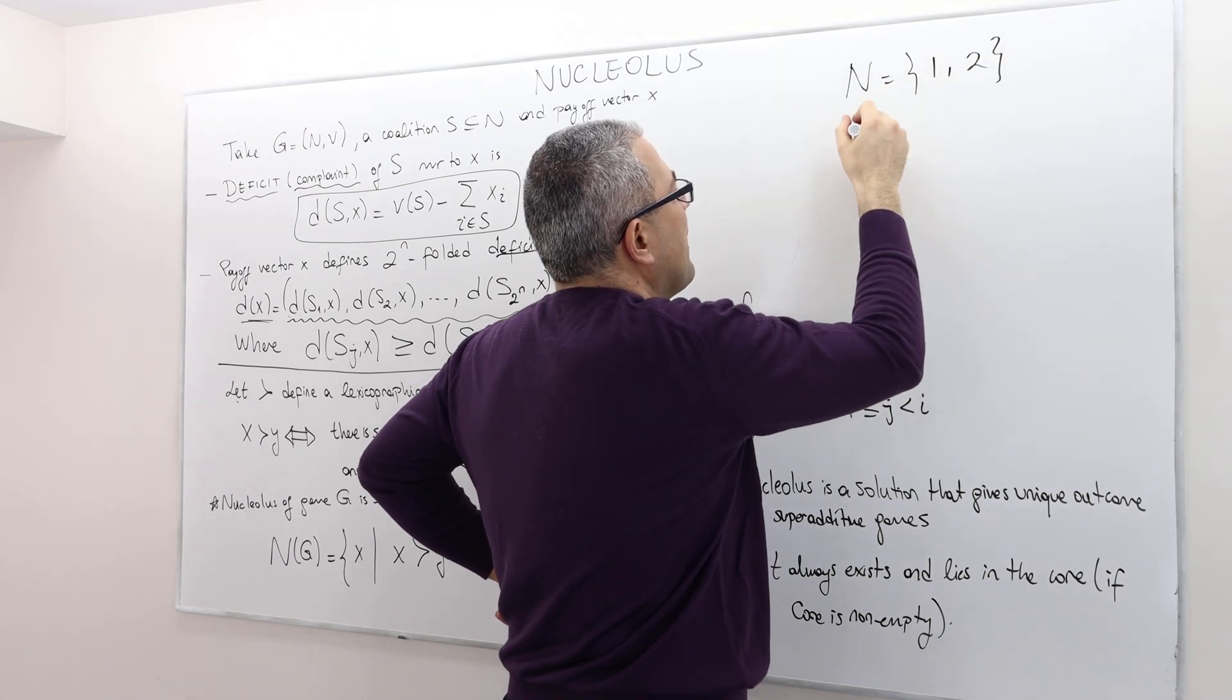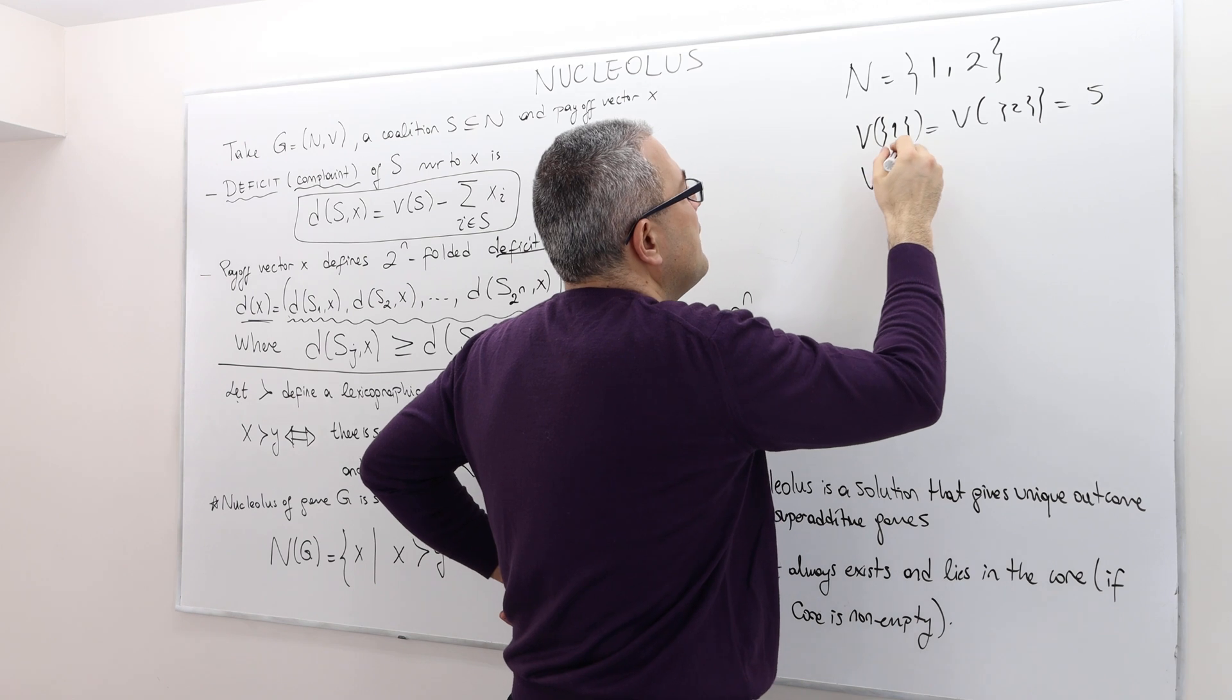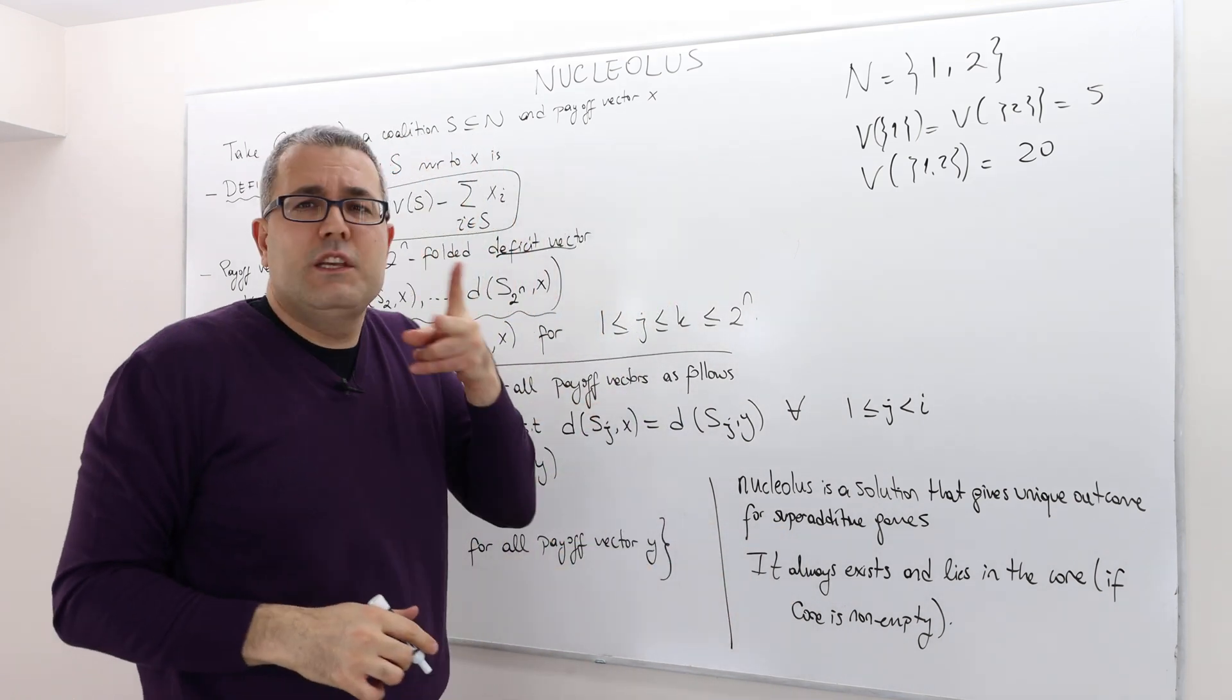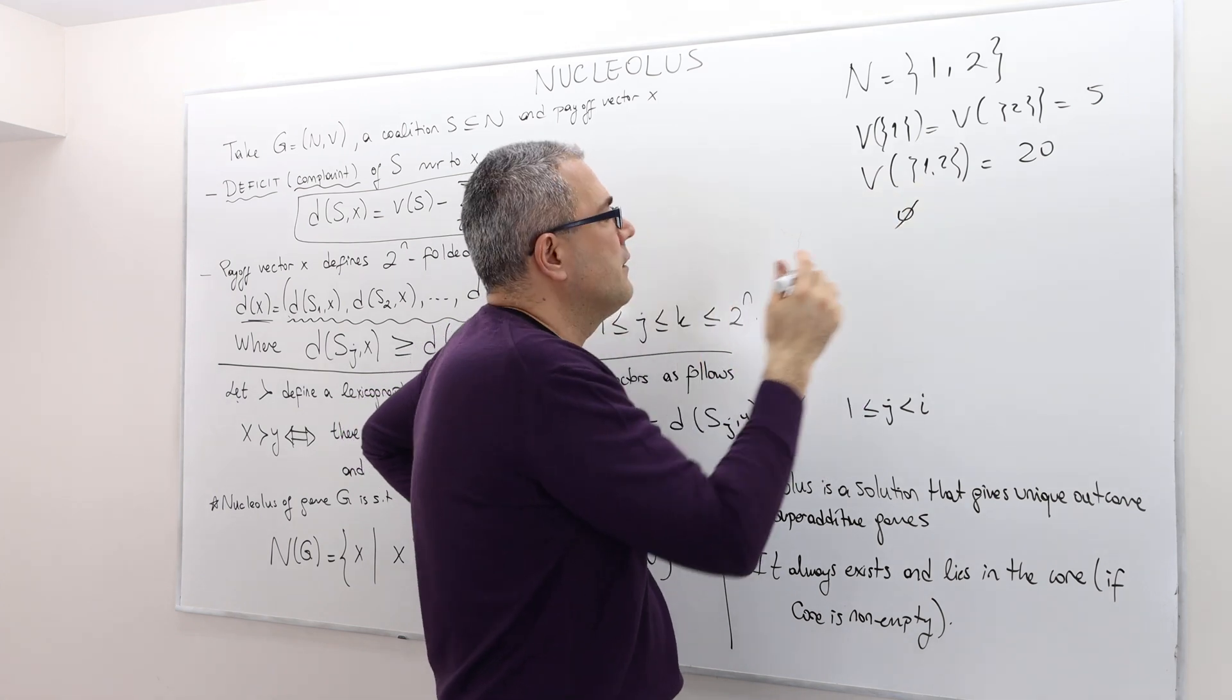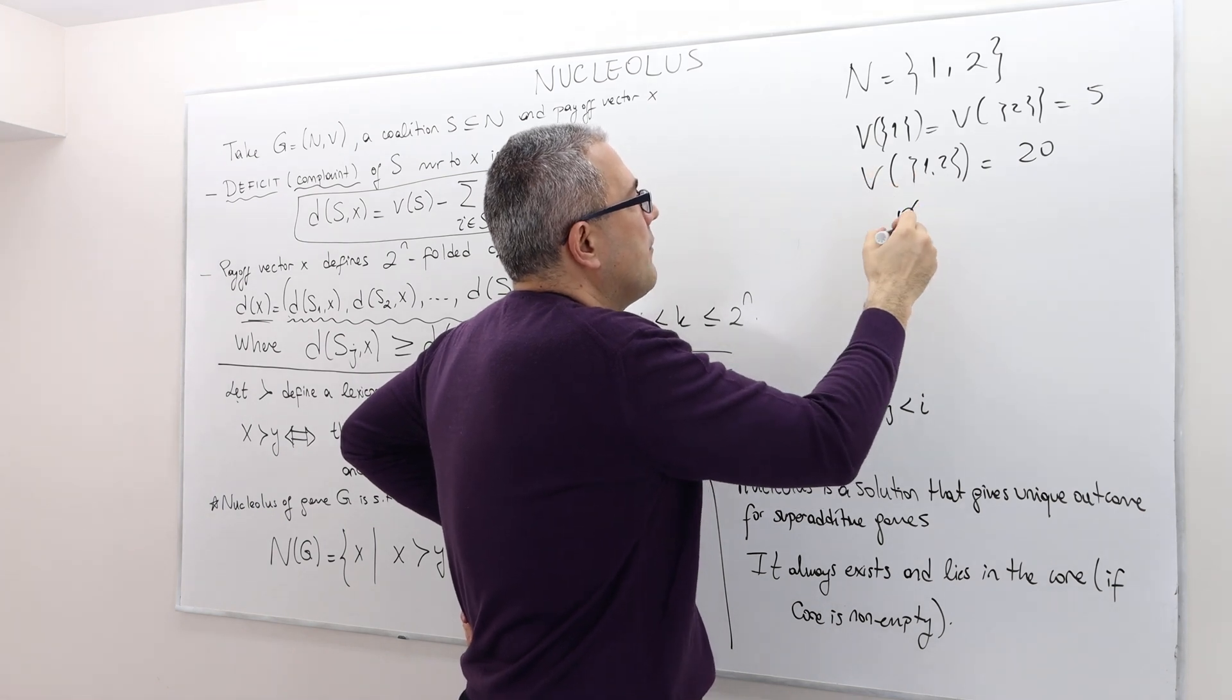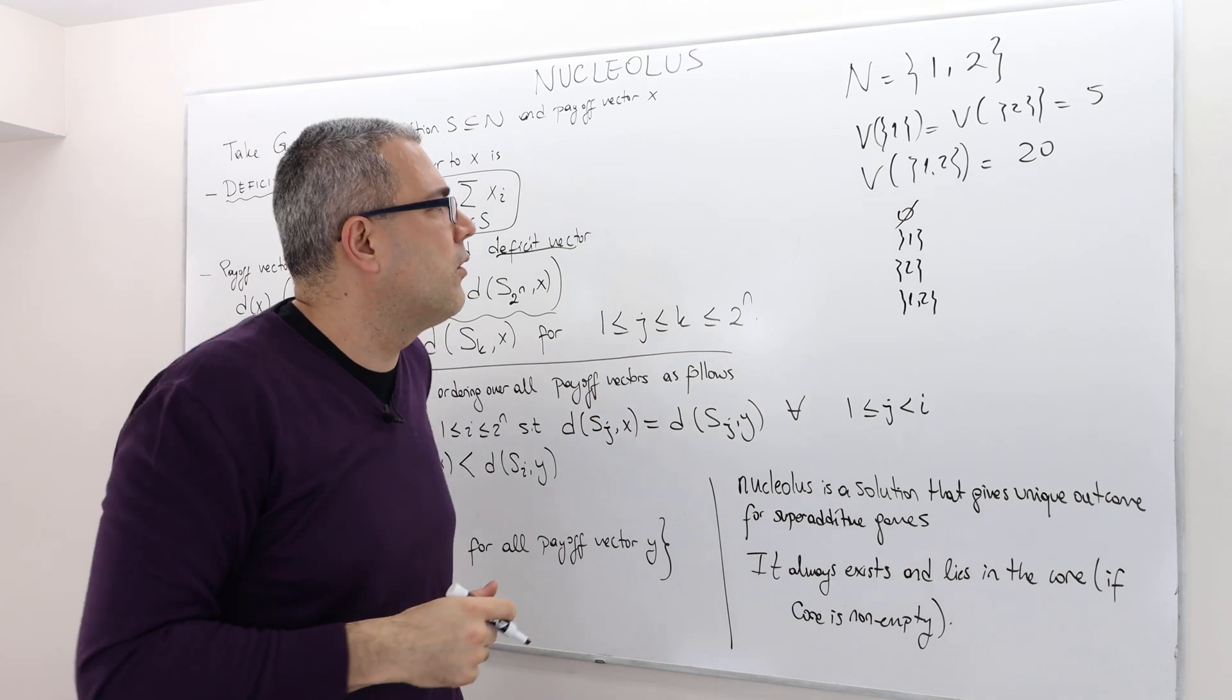N is the set of players 1 and 2. We talked about this. v of 1, which is equal to v of 2, was 5, and then v of 1, 2 is equal to 20. So out of these two players, how many coalitions can we have? Obviously, the empty coalition, and then coalition of one player, player 1, player 2, and both players.